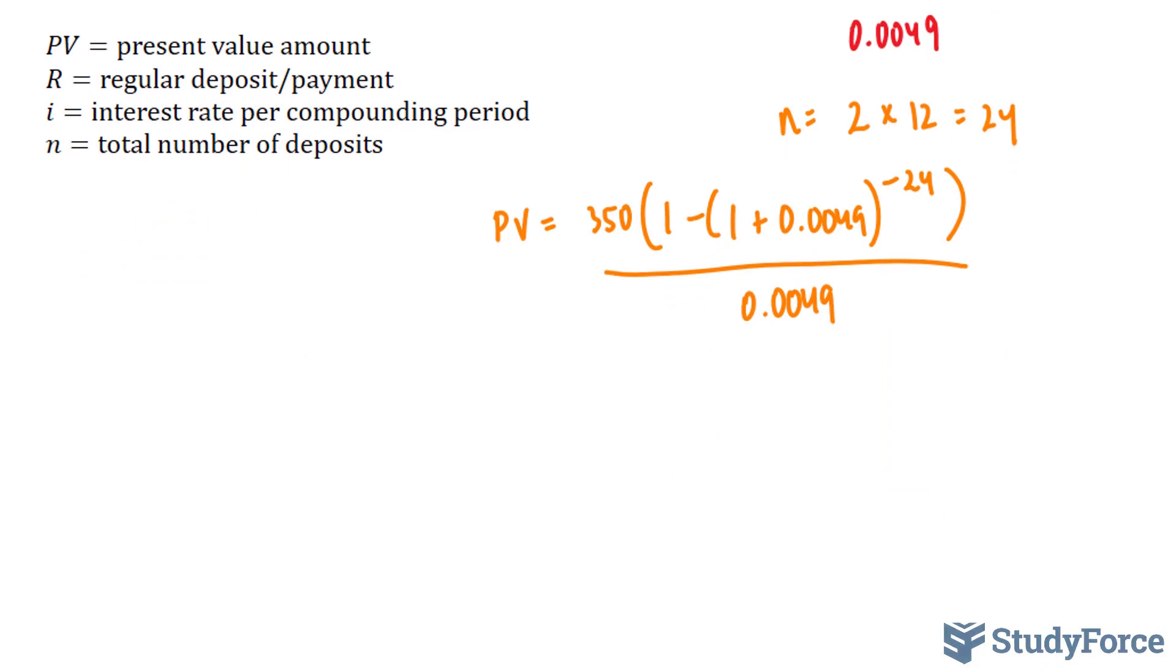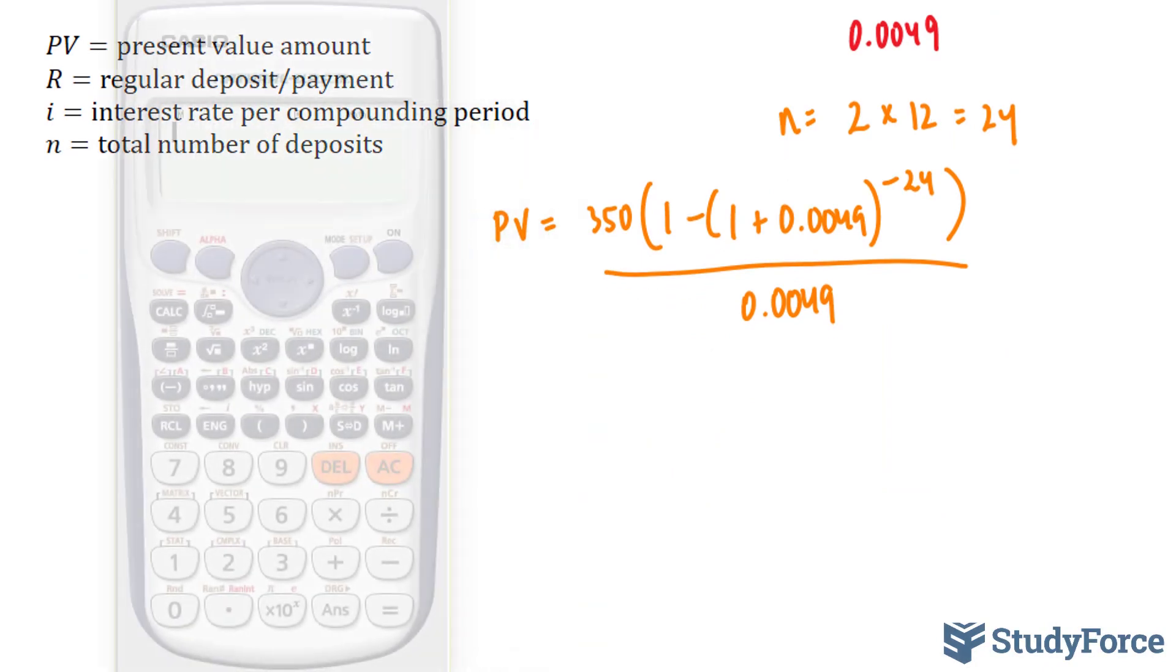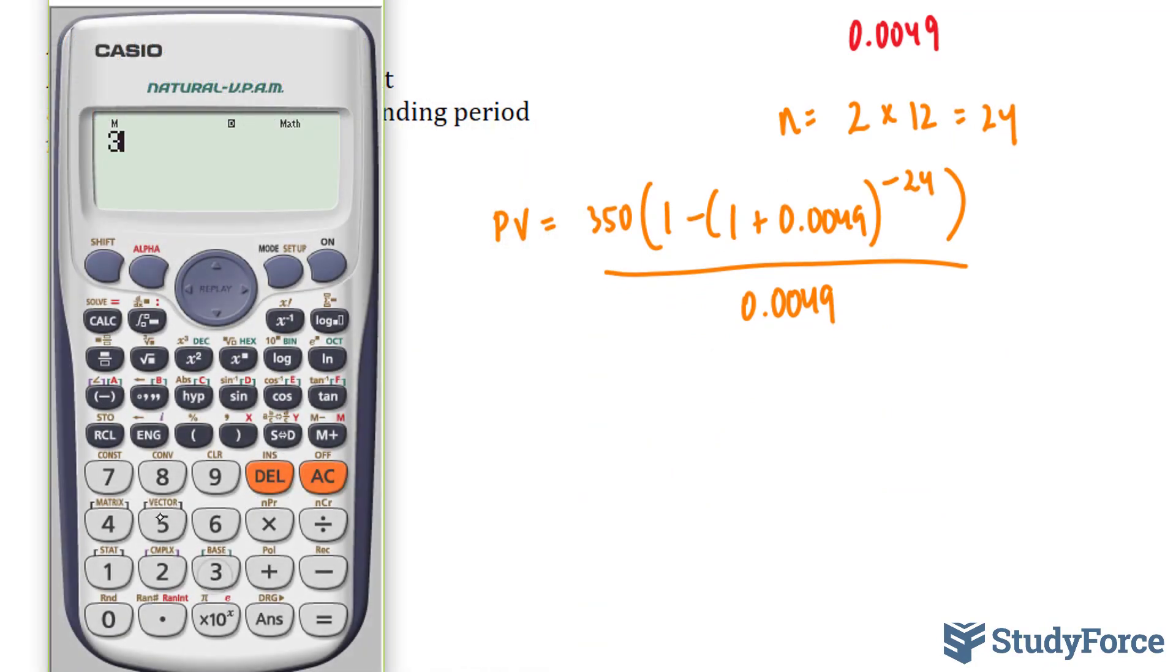All we have to do now is use our calculator. So let's go ahead and do that. We have 350, bracket 1, minus this bracket, 1, plus 0.0049 to the power of negative 24, divided by 0.0049, and the answer we get is 7,906.